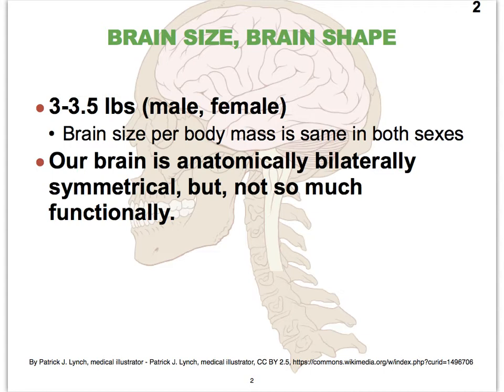Another important thing to remember about our brain is that we can literally cut it in half and therefore we have two anatomically identical halves. When we take a look at the functions of those halves, they are not perfectly identical. So the brain is anatomically bilaterally symmetrical, but not so much at a physiological level.